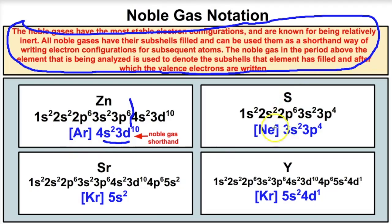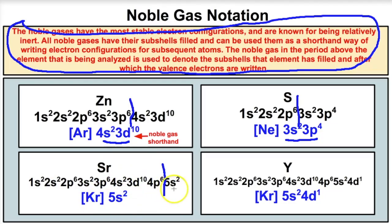For sulfur, the noble gas before it is neon, whose configuration is 1s2, 2s2, 2p6. We put [Ne] in brackets and write everything after: 3s2, 3p4. For strontium, the preceding noble gas is krypton, so we write [Kr] 5s2. For yttrium, the preceding noble gas is also krypton, giving [Kr] 5s2, 4d1.